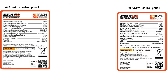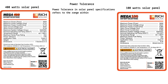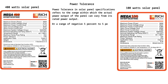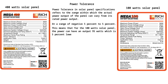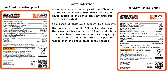9. Power tolerance. Power tolerance in solar panel specifications refers to the range within which the actual power output can vary from its rated output, at a range of negative 5% to positive 5%. For the 100-watt solar panel, this means output can be 95 watts (5% lower) or 105 watts (5% higher). Its role in the solar system is to help in system design and energy yield predictions. A lower tolerance ensures consistency and reliability in energy output.